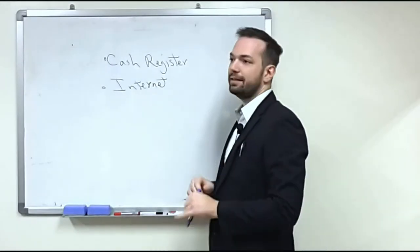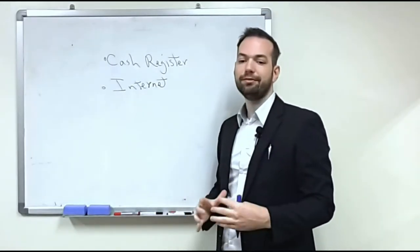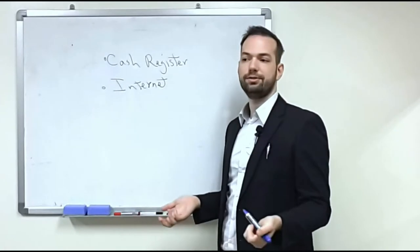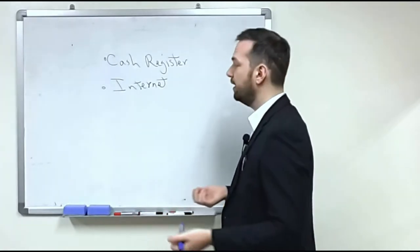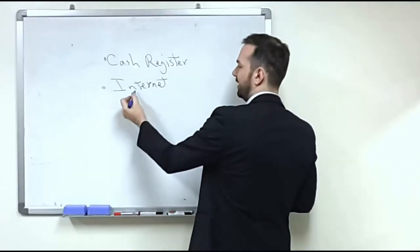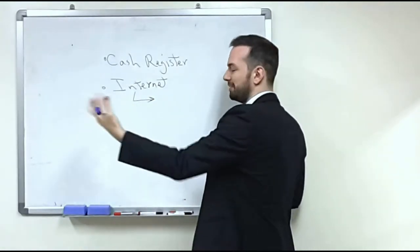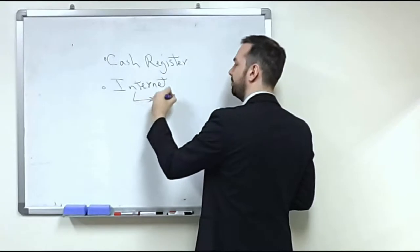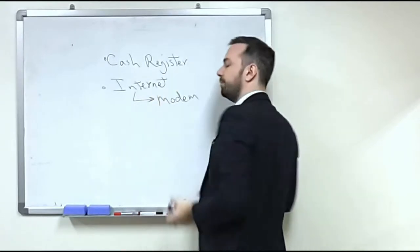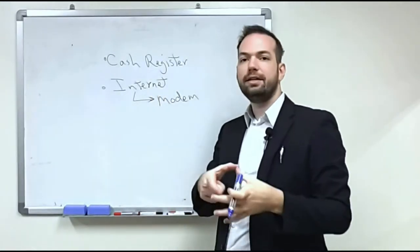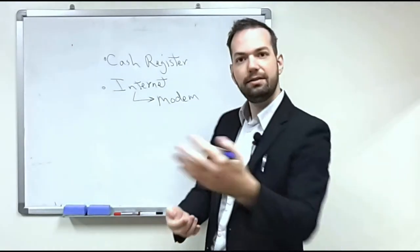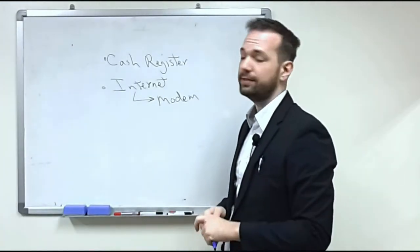They have internet access and this gives them access to a lot of other features that the cash register can usually handle as well. To have the internet they first need usually some sort of internet connection from the service provider but also a modem. A modem would be like a little box that the internet service provider gives you. Whenever you plug it in then you can actually get internet from the box.